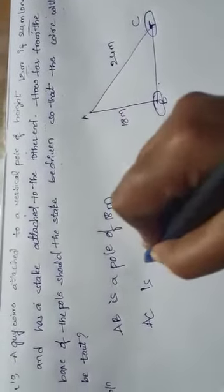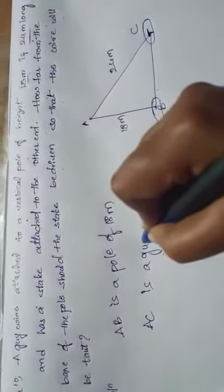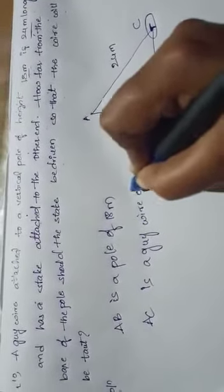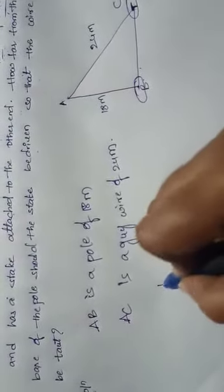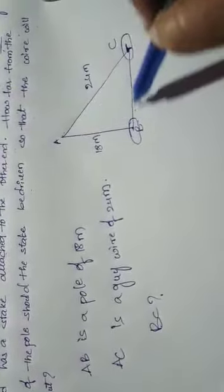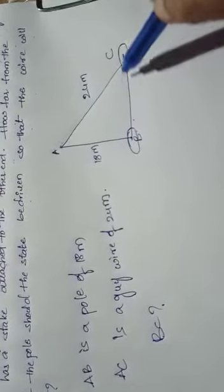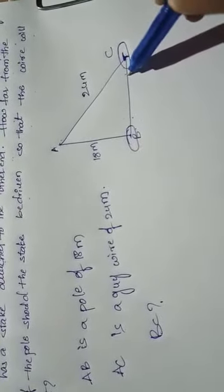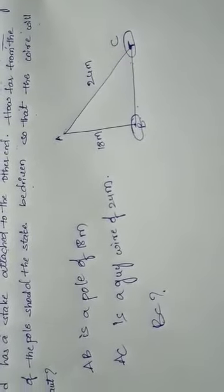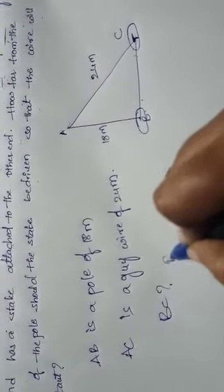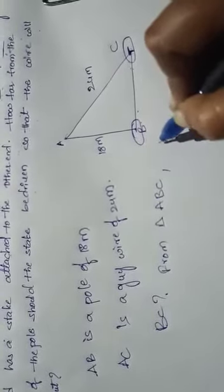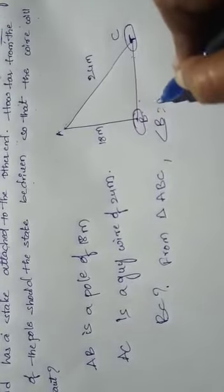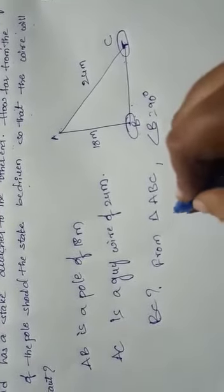Height of the pole is 18 meters and AC is the guy wire of 24 meters. Here we have to find BC. See this figure. This is a right angle triangle. So, applying Pythagoras theorem from triangle ABC, angle B equal to 90 degrees.